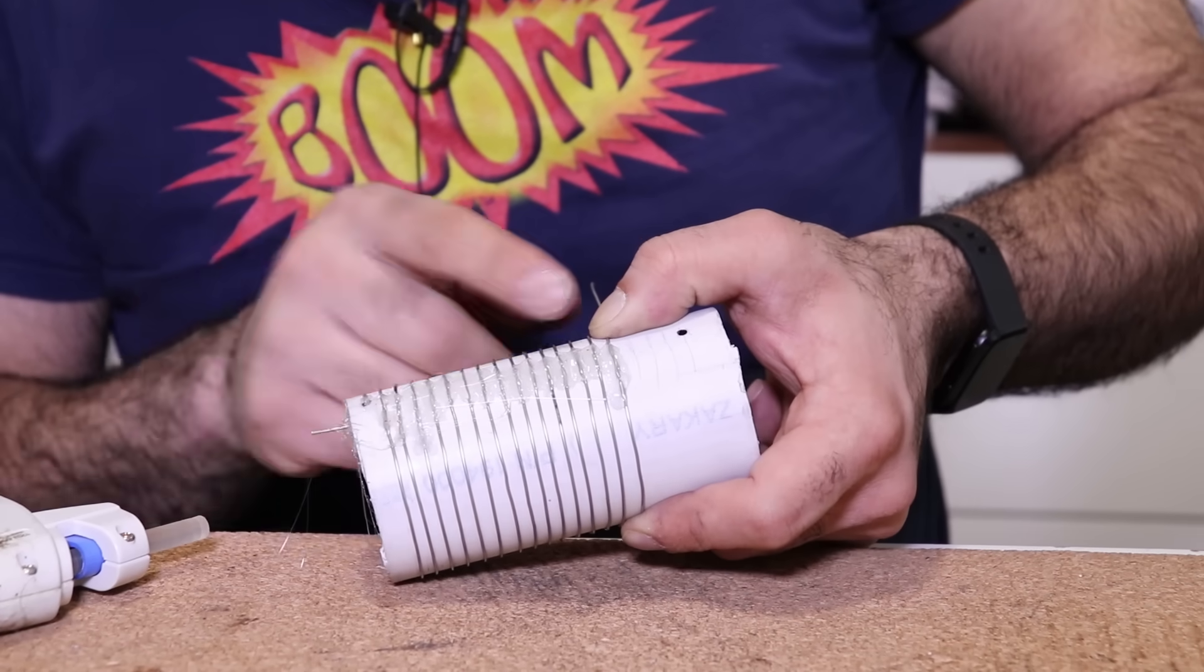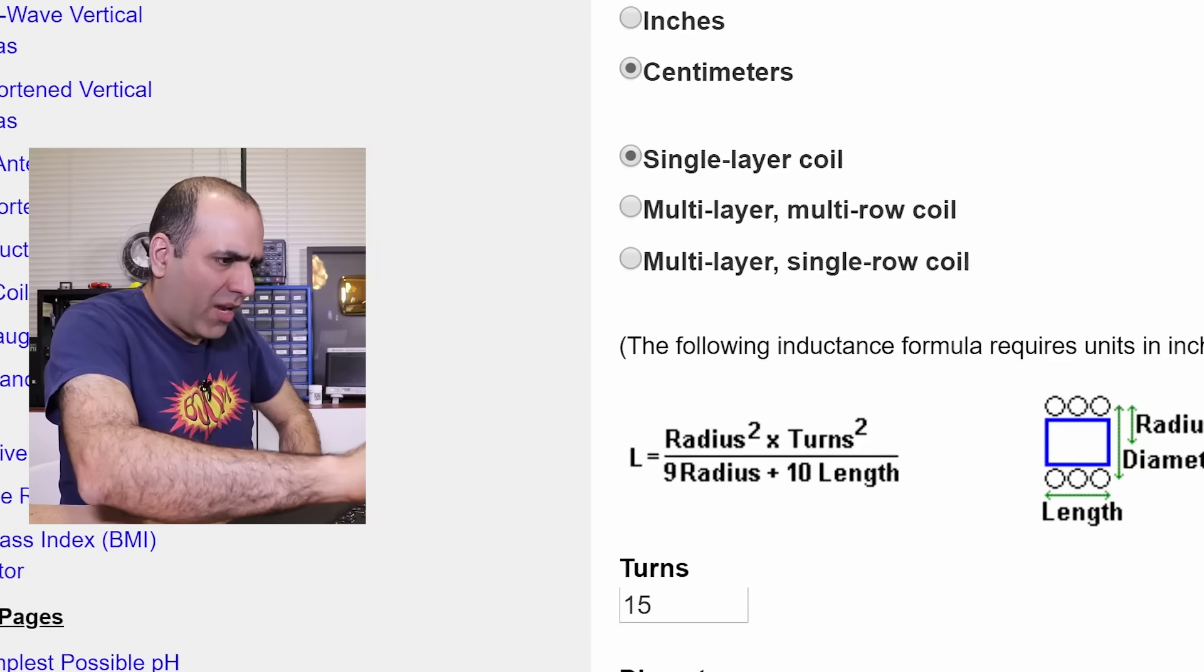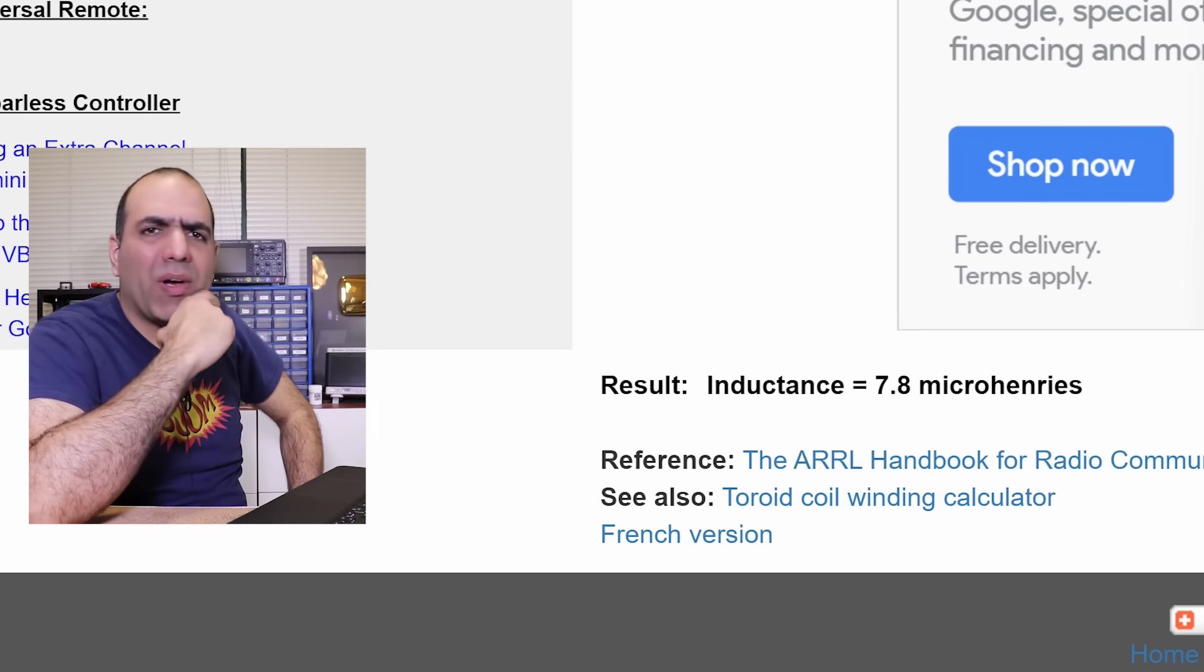Dammit, I only have enough wire for 15 turns. Hopefully that's enough, otherwise I'll have to add. According to the calculator, with 15 turns I should get around 7.8 microhenrys. That would significantly raise my resonance frequency.